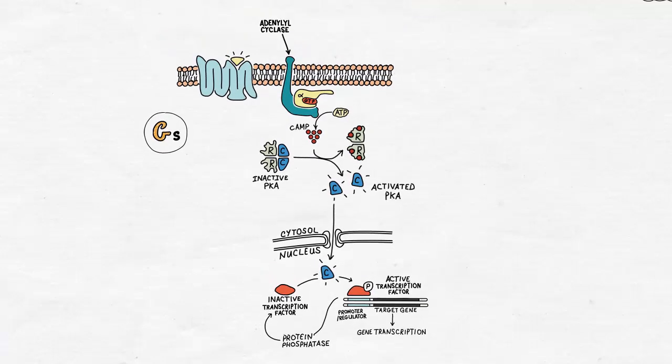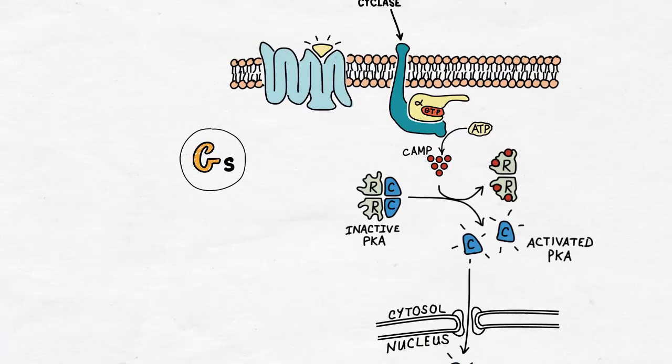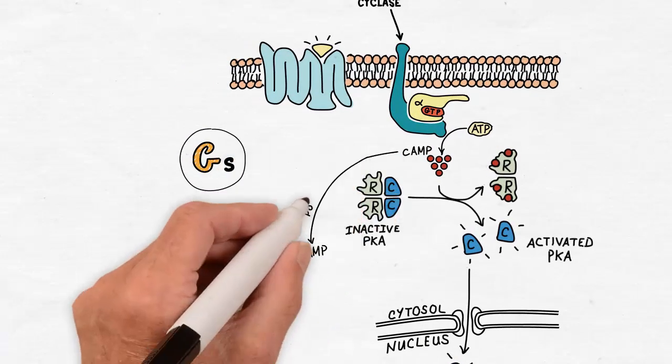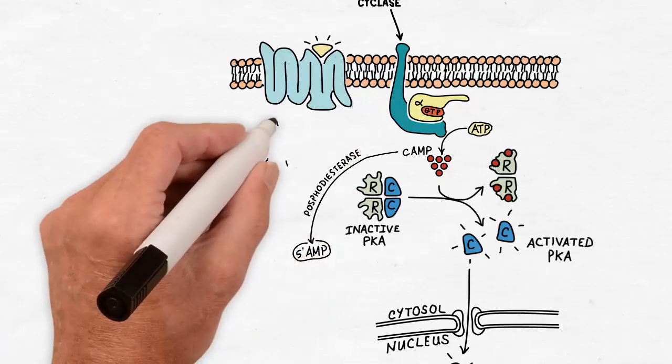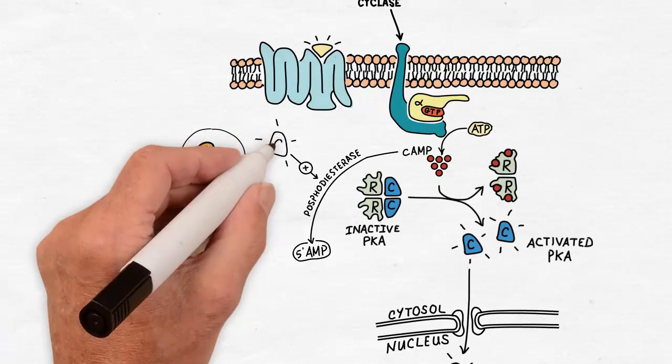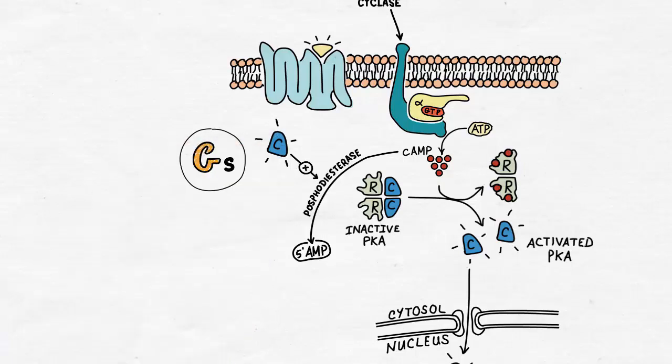Among the target proteins that PKA phosphorylates is the phosphodiesterase enzyme, which hydrolyzes cyclic AMP into 5'AMP, making a negative feedback arrangement that keeps the PKA effect brief and localized.